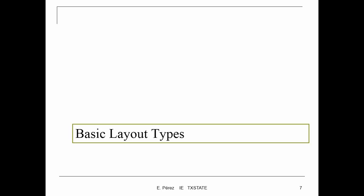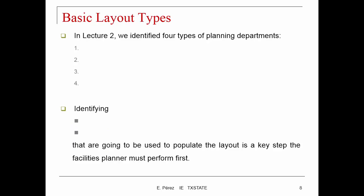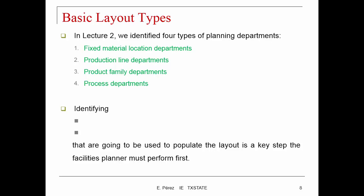What are the different basic layout types? Lecture 2 identifies four types of planning departments: material location departments, production line departments, product family departments, and the process department. Identifying the right number and type of departments to populate the layout is a key step that facilities planning must perform first, so we need to understand what type and number of departments we're going to need in order to design our facility.